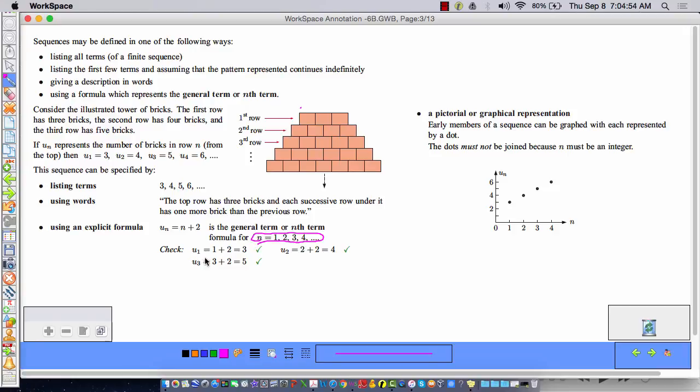For instance, u sub 1 here is equal to 1 plus 2. So that gives me the total of 3, and u sub 1 stands for the first row. 3 is the first term. u sub 2 equals 2 plus 2, that's equal to 4. 4 is the second term. 5 is the third term. And notice that all we're doing is we're adding the term number to the number 2, because if you look, the number of bricks here is 2 more than the row number. It's 2 more than this row number. It's 2 more than this row number. So that's why there's always a 2 here.